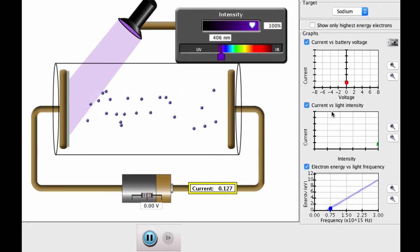The other graph that's interesting to look at here is current versus light intensity. If I change the light intensity, I get a linear slope. So, as I change the intensity, the current changes linearly. And if I change the frequency, then the energy of the electrons changes linearly with the frequency of the light.